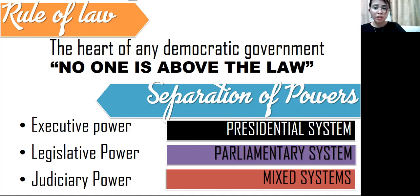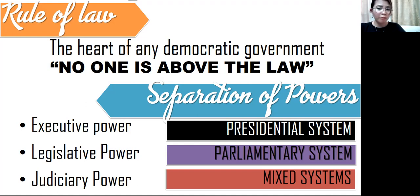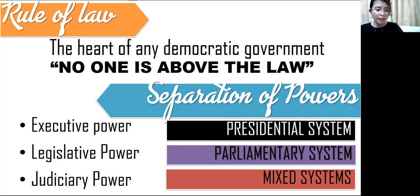What about the presidential system, the parliamentary system, and the mixed system? These three are the patterns involved in democratic government. Before the mixed system existed, there were only two: the presidential system and the parliamentary system. What are the differences among these three? Let's start with the presidential system.